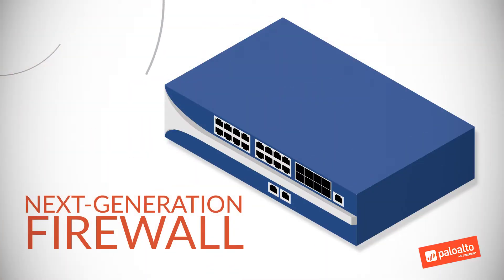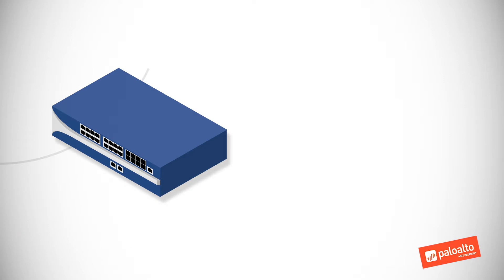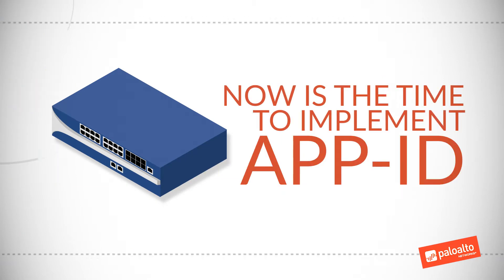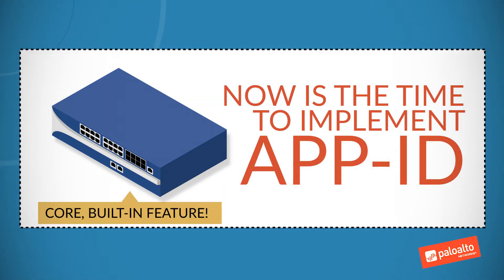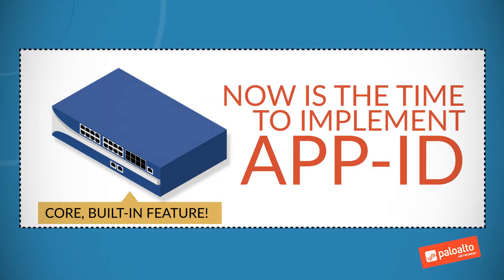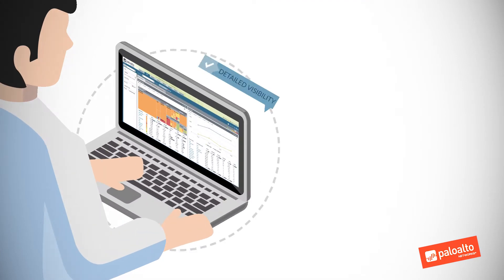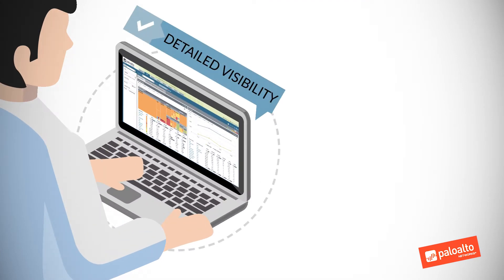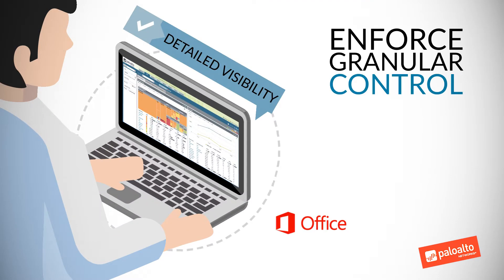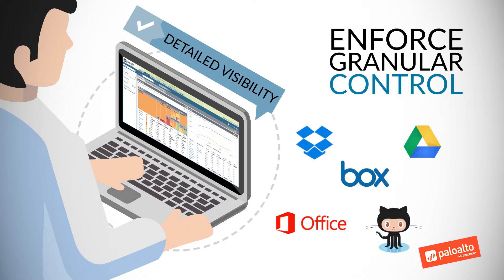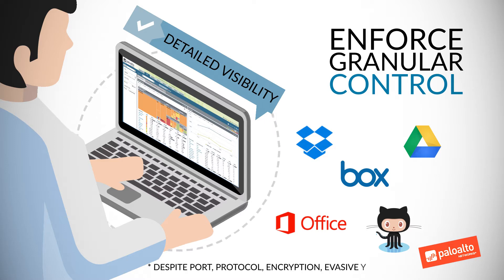Whether you've just deployed your Palo Alto Network's Next Generation Firewall or been using it for years, now's the time to implement AppID, a core built-in feature of our Next Generation Firewall. With AppID, you get detailed visibility and can enforce granular control over all applications and functions running on your network, despite port, protocol, encryption, or evasive tactics that might be in play.